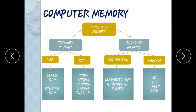Random access — for example, a CD, compact disc, hard disc, and floppy disc. If you want to play music number 20 on a CD, you can jump directly to track 20 without going through all previous tracks — this is random access.